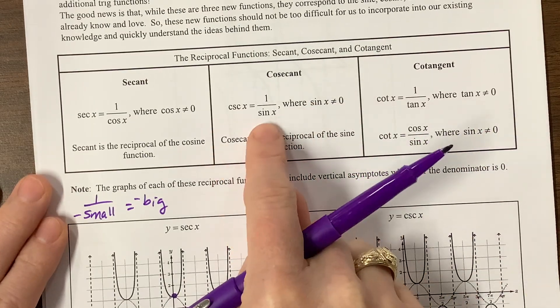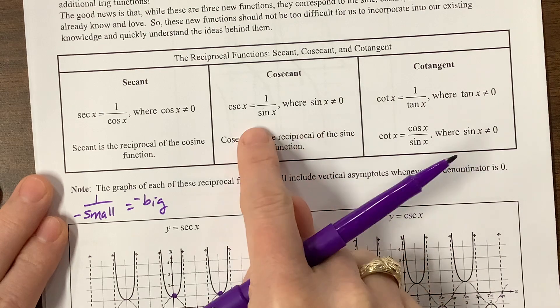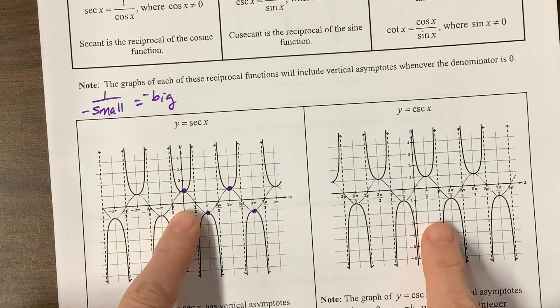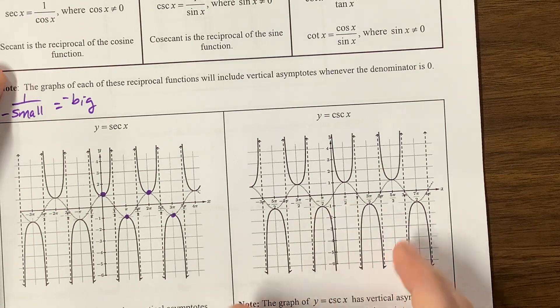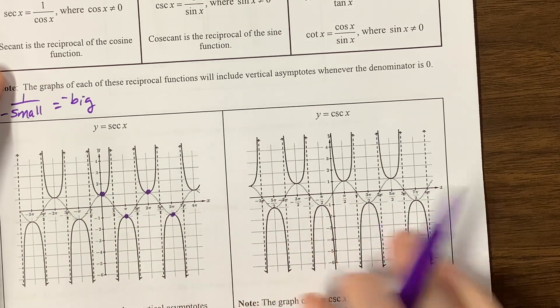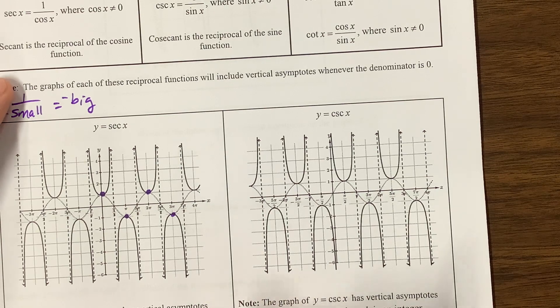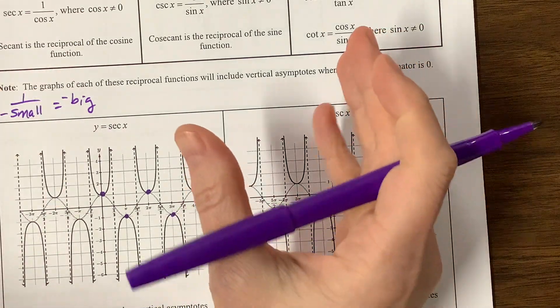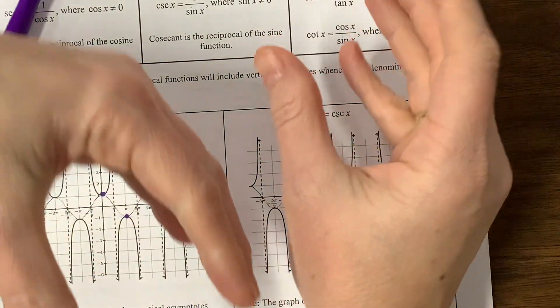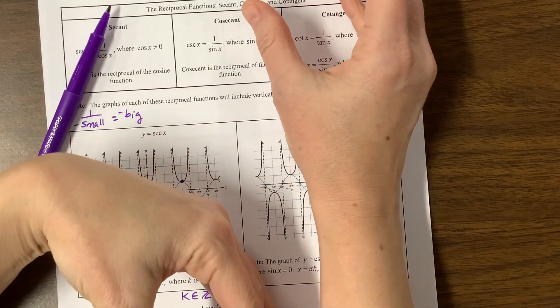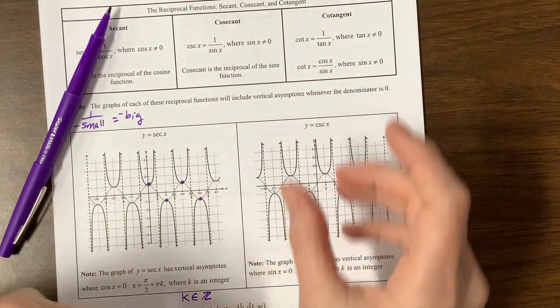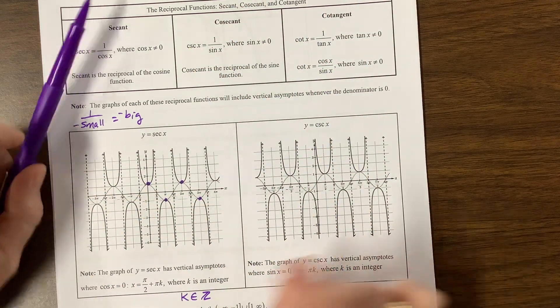Cosecant is defined to be 1 over sine, and it behaves in an almost identical way to secant, except now we're graphing sine and then taking the reciprocal. It's the same basic shape, but they're shifted over. This is also one where my kids nicknamed it Lego hands, because I would show them my hands doing this sort of thing, and it looks like little Lego figures.